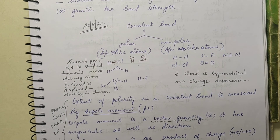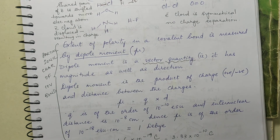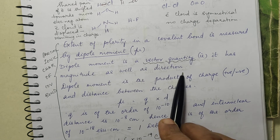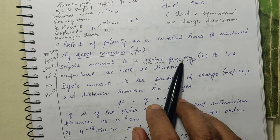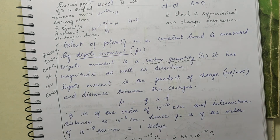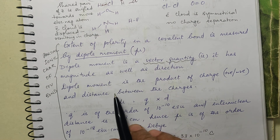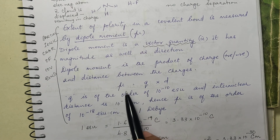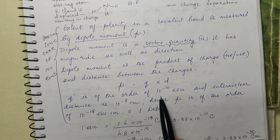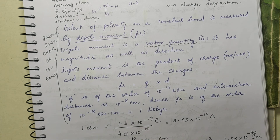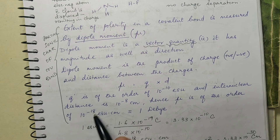The extent of polarity in a covalent bond is measured by dipole moment. Dipole moment is a vector quantity — it has magnitude as well as direction, unlike scalar quantities. This polarity shows partial ionic character of covalent bonds. Dipole moment (μ) is defined as the product of charge and the distance between the charges: μ = q × d. Here q is of the order of 10⁻¹⁰ esu and d is the internuclear distance of the order of 10⁻⁸ cm, so μ is of the order of 10⁻¹⁸ esu·cm.